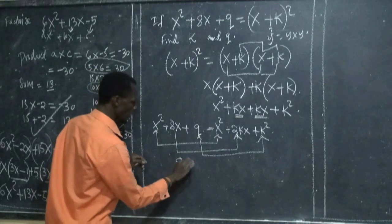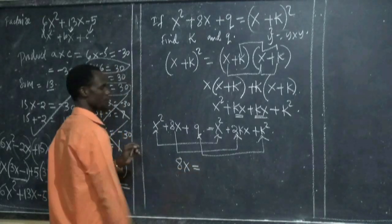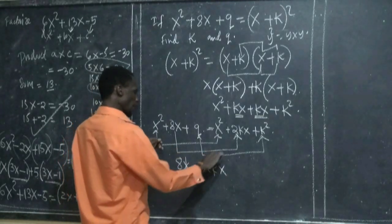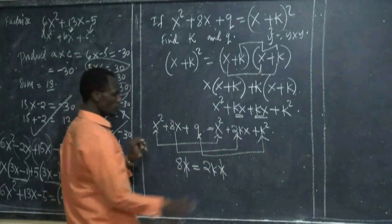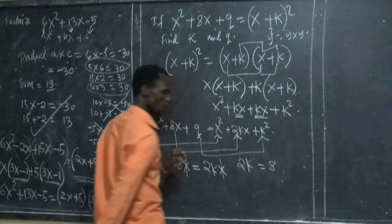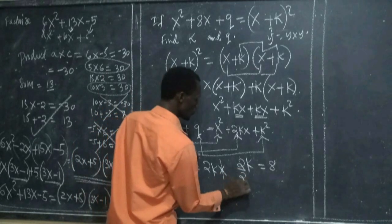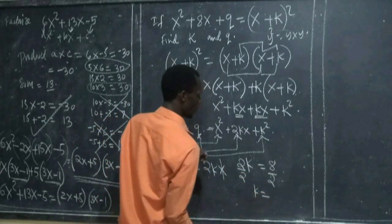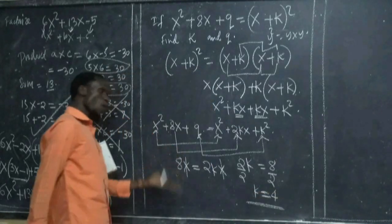We have 8x is equal to 2kx. Then you remain with 2k is equal to 8. Divide by 2. Now k is equal to 4. This is what you got.